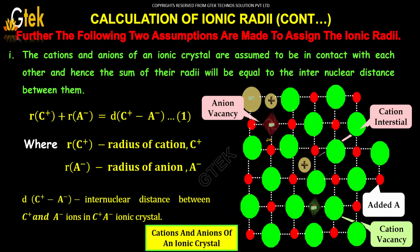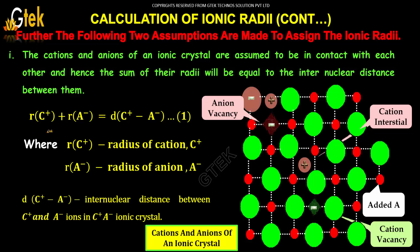There are two assumptions used to assign ionic radii. First, the cations and anions of an ionic crystal are assumed to be in contact with each other, and hence the sum of their radii will be equal to the internuclear distance between them. So, the radius of the cation plus the radius of the anion equals the bond length — that is, the internuclear distance between the cation and anion in the ionic crystal.